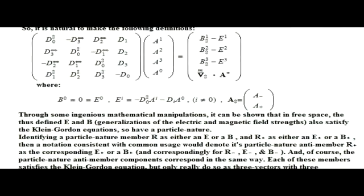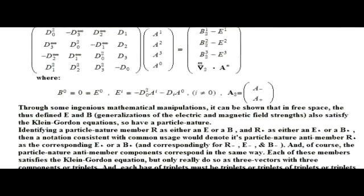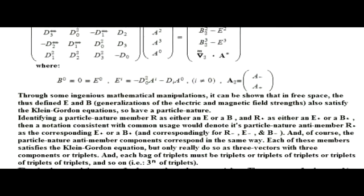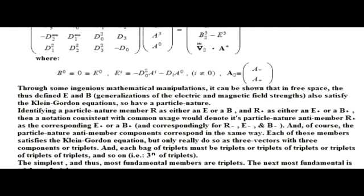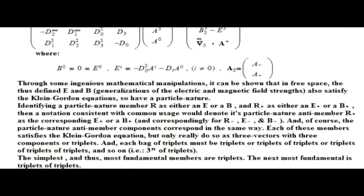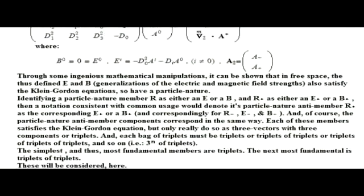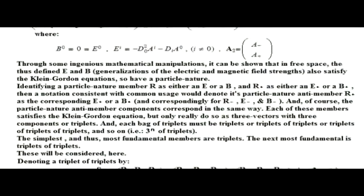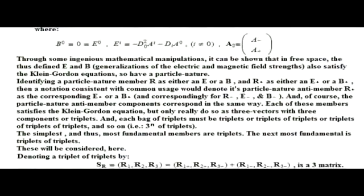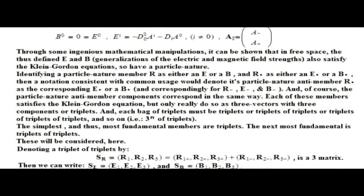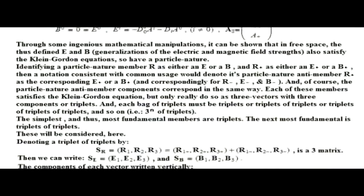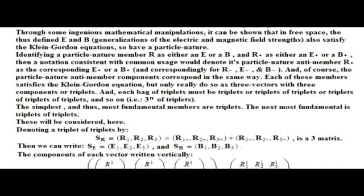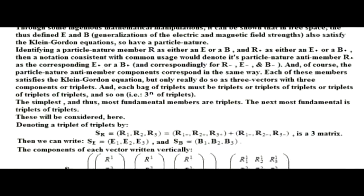Each of these members satisfies the Klein-Gordon equation, but only really do so as three vectors with three components or triplets, and each bag of triplets must be triplets or triplets of triplets, and so on. The simplest and thus most fundamental members are triplets, the next most fundamental is triplets of triplets. These will be considered here.